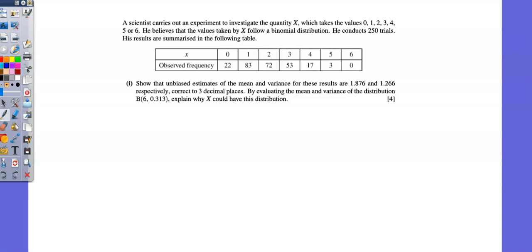A scientist carries out an experiment to investigate the quantity x, which takes the value 0, 1, 2, 3, 4, 5, or 6. He believes that the values taken by x follow a binomial distribution. He conducts 250 trials. His results are summarized in the following table. Requirement 1: show that unbiased estimates of the mean and variance for these results are 1.876 and 1.266, respectively, correct to three decimal places. By evaluating the mean and variance of the distribution, explain why x could have this distribution.